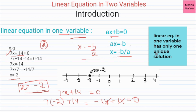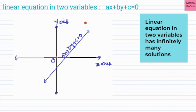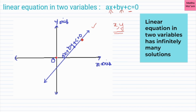We can conclude that a linear equation in one variable has only one or unique solution. Now we will look at linear equation in two variables. Here we have two variables x and y, where a and b are the coefficients of x and y respectively, and c is a constant. The standard form is ax plus by plus c is equal to zero, which represents a line on the x-axis and y-axis.